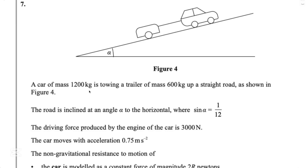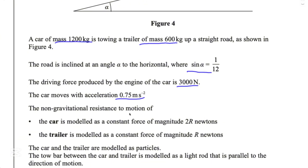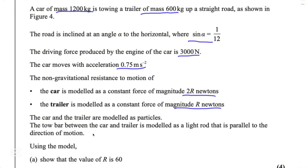A car of mass 1200 kg is towing a trailer of mass 600 kg up a straight road inclined at angle alpha to the horizontal where sine alpha equals 1 over 12. The driving force produced by the engine is 3000 N, and the car moves with acceleration 0.75 m/s². The non-gravitational resistance to the car is modeled as 2R N, and to the trailer as R N. Using the model, show that R equals 60.